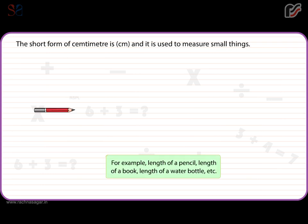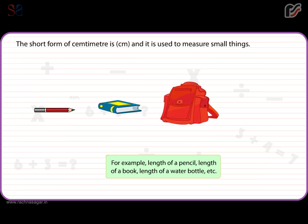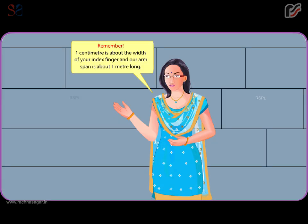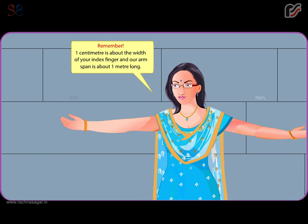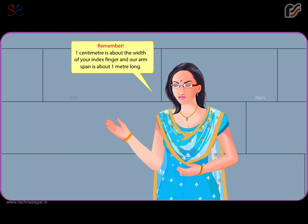For example, the length of a pencil, length of a book, length of a water bottle, etc. Remember, 1 centimeter is about the width of your index finger, and our arm span is about 1 meter long.